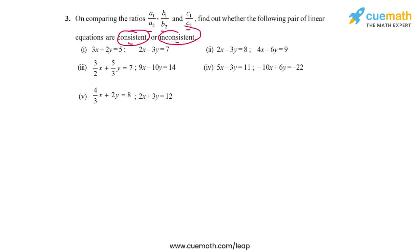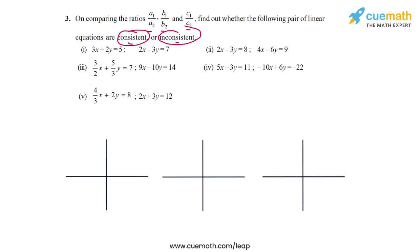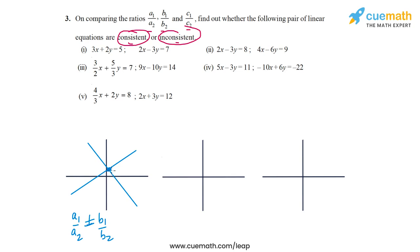There are three possibilities. The first possibility is that A1/A2 is not equal to B1/B2. In this case, the two lines representing the pair of linear equations will be intersecting lines, which means they will have exactly one unique solution. So when A1/A2 is not equal to B1/B2, the system will be consistent — it will have exactly one solution.